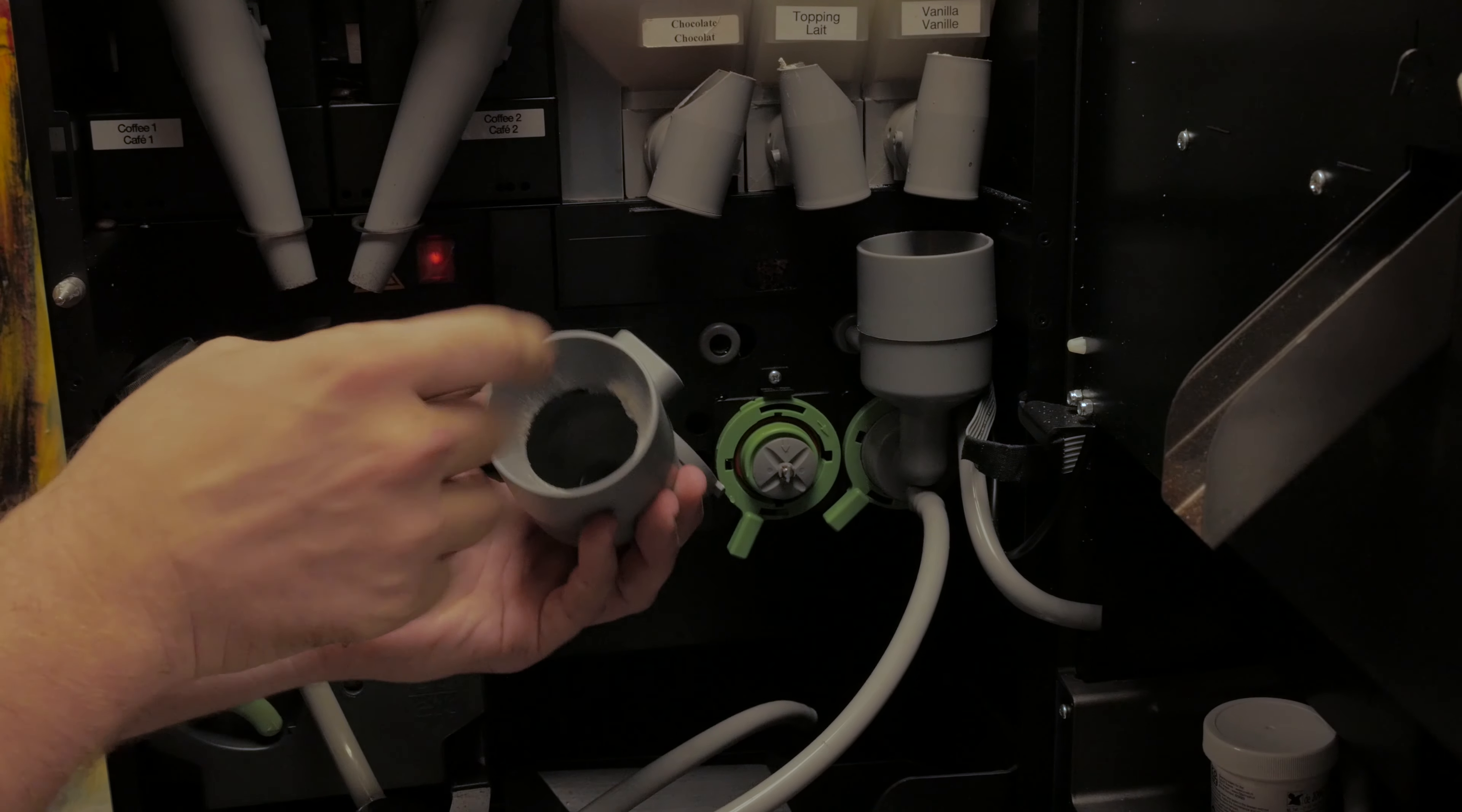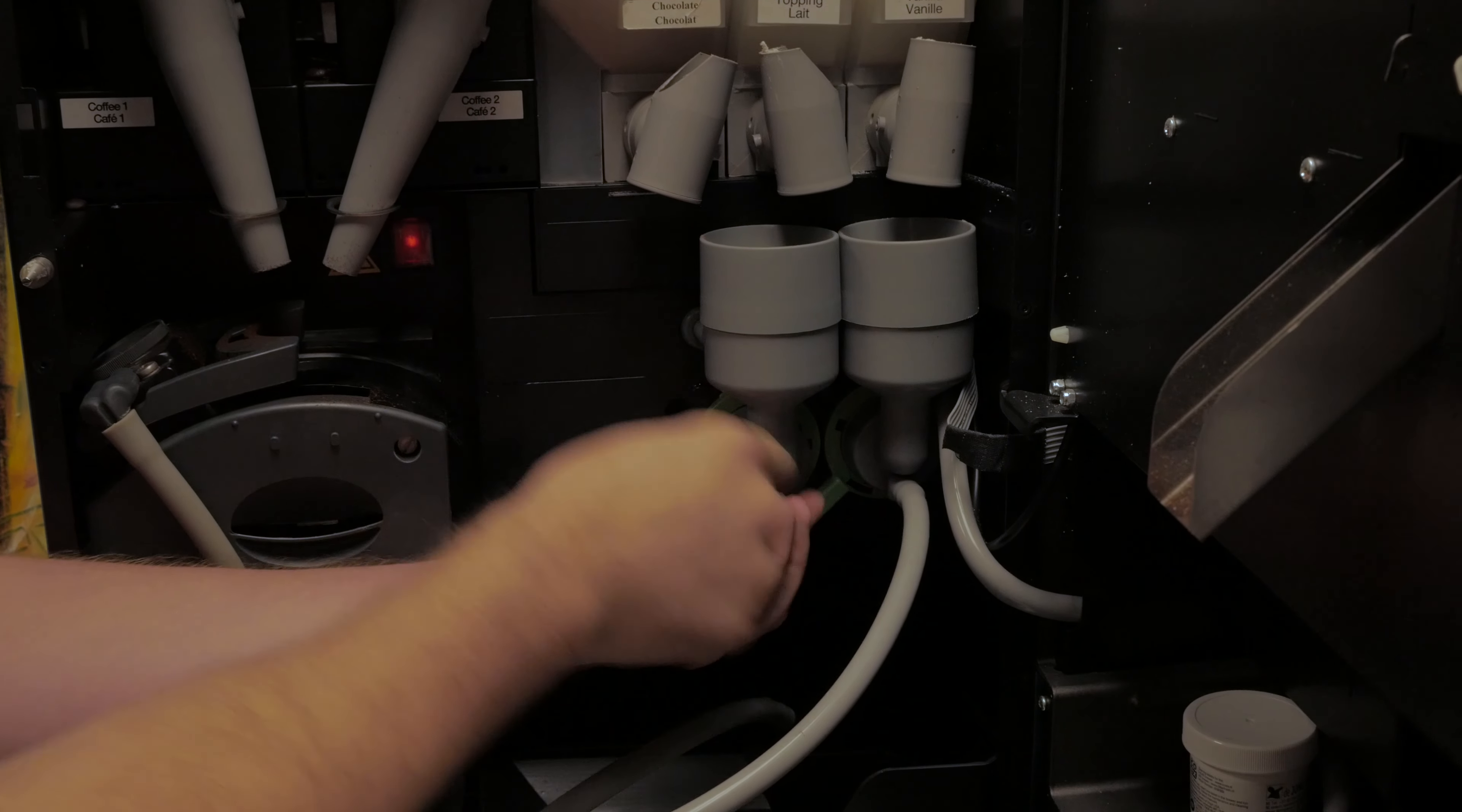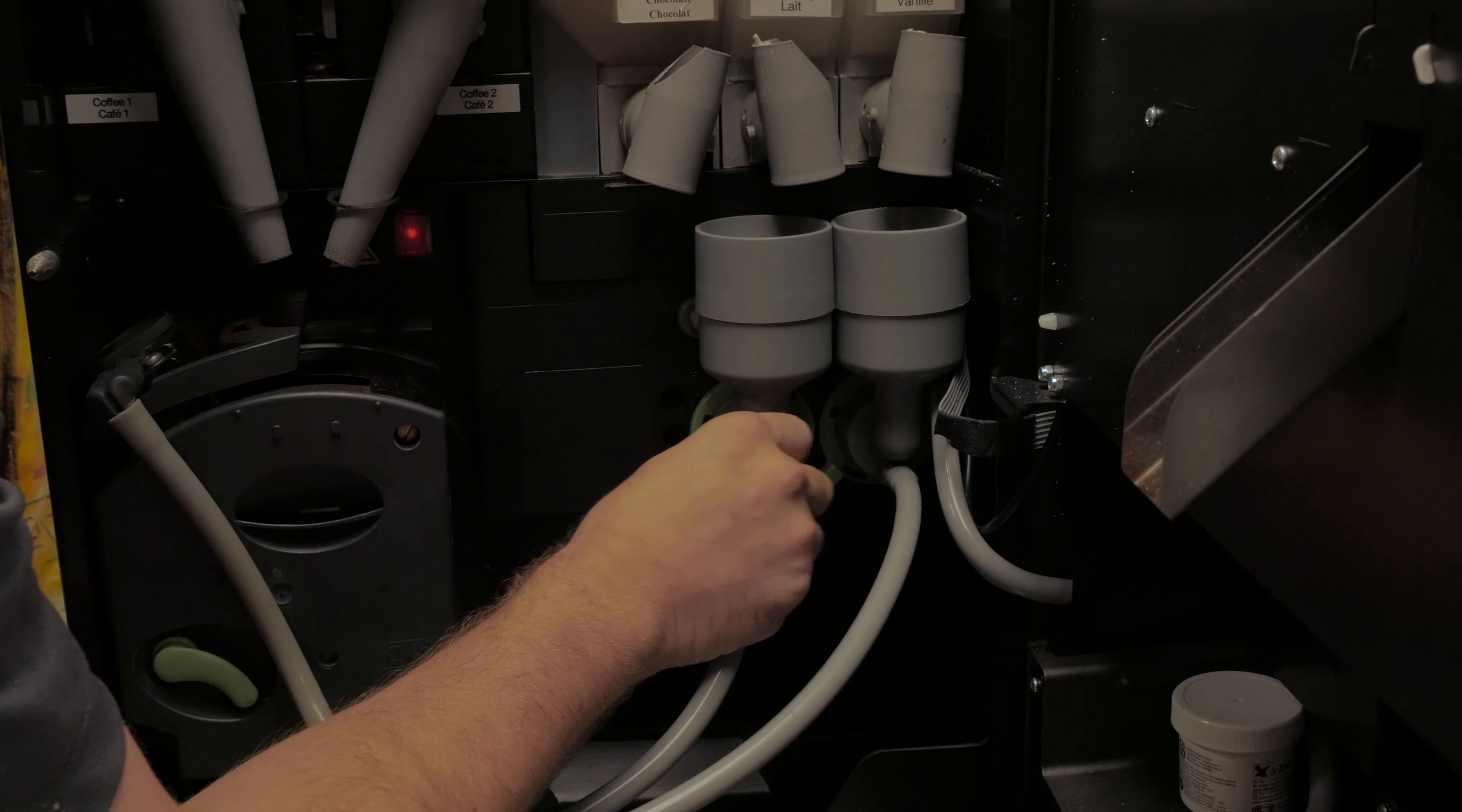Once it is all clean you can slide it back on. Make sure the divots are all lined up and rotate the option clockwise to lock it back into position and place the hose back correctly.